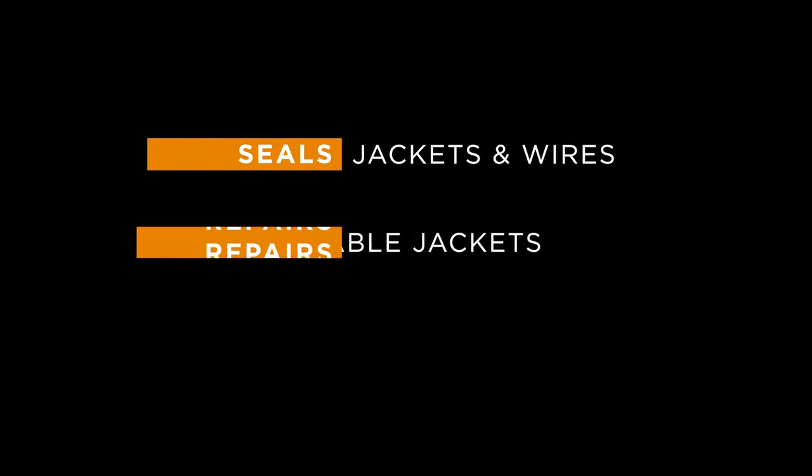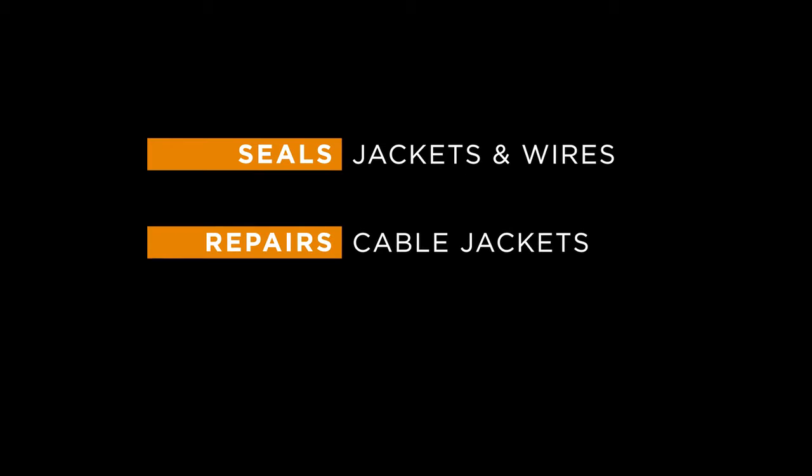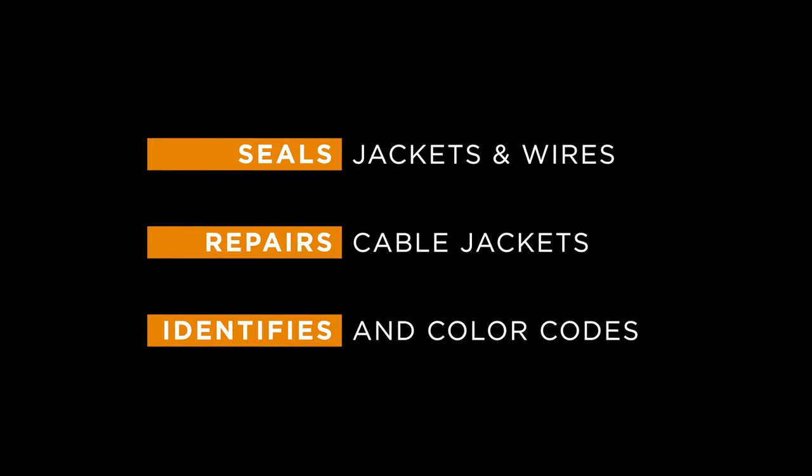Heat shrink tubing can be used to insulate, protect, seal a cable jacket or bare wire. It can be used to repair a cable jacket that's been nicked. It can also be used for color-coding and identification of cable jackets.